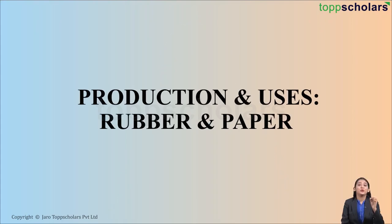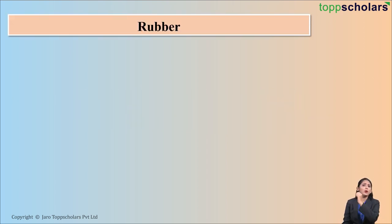Hello students, welcome to Top Scholars. Today we'll be discussing the most important substances that we use in our everyday life: rubber and paper. If I talk about rubber, we say that rubber is a natural substance. It is obtained from nature, but from where do we obtain rubber?